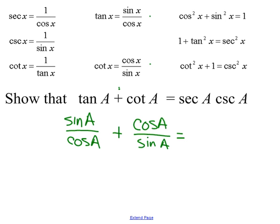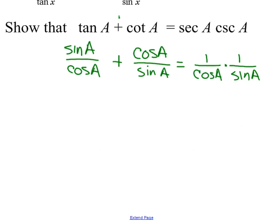I like to think about where I'm going, so I'll also write the right side: secant of a is 1 over cosine of a, times 1 over sine of a for cosecant — that gives one fraction on the right. On the left I have two fractions and on the right I have one fraction, so I need to combine the two fractions on the left. When we want to add fractions we need a common denominator, and the simplest common denominator is to multiply the two denominators — so cosine of a times sine of a.